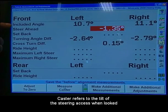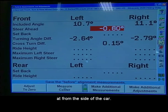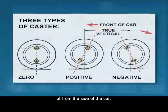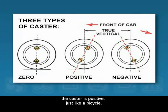Caster refers to the tilt of the steering axis when looked at from the side of the car. When the load through the steering axis is pointing the load in front of the tire, the caster is positive, just like a bicycle.